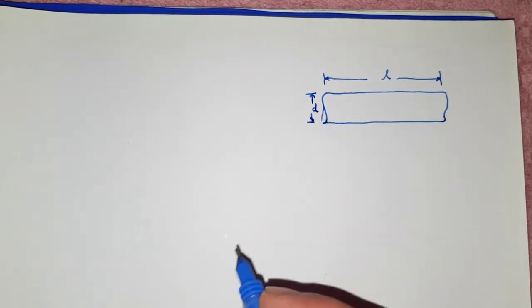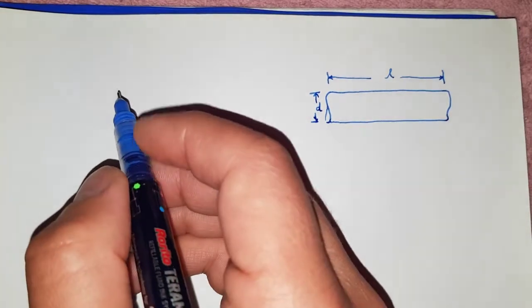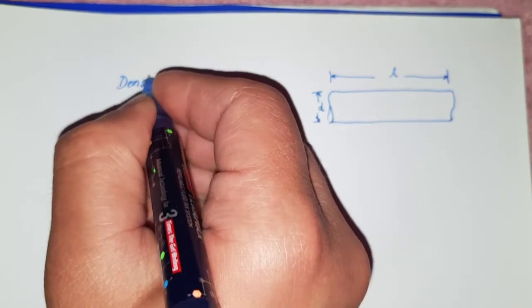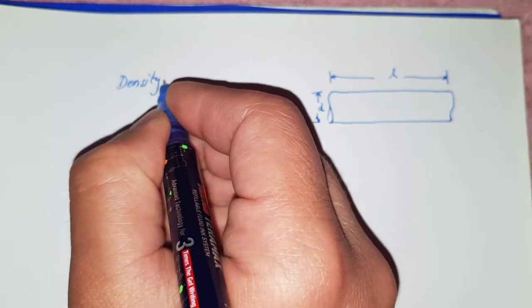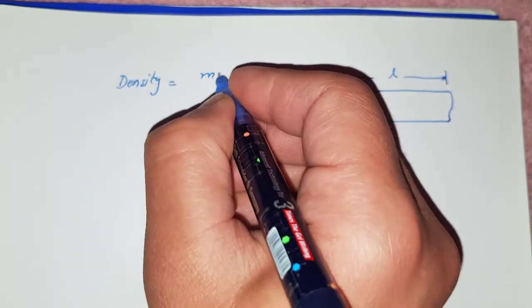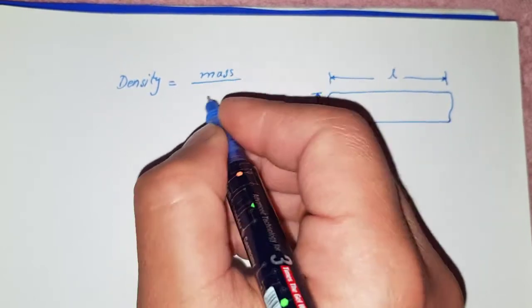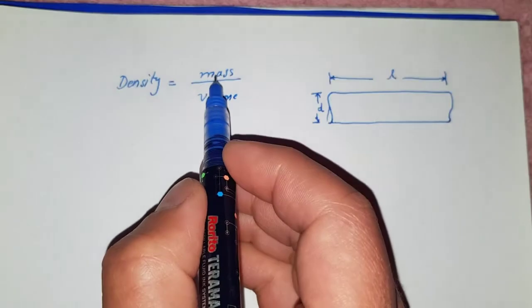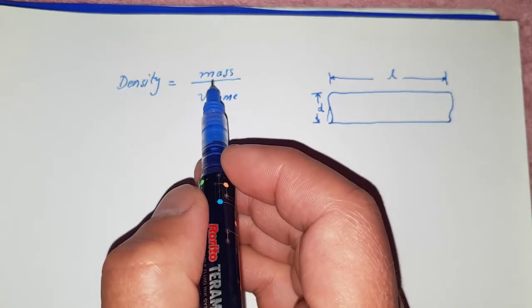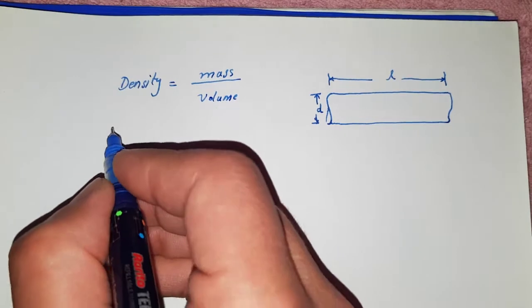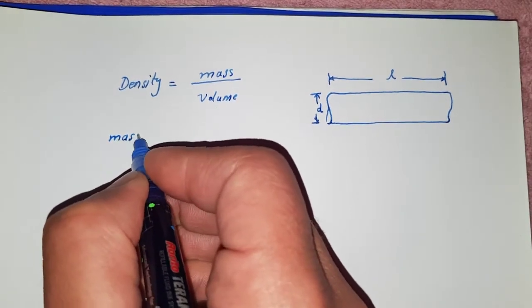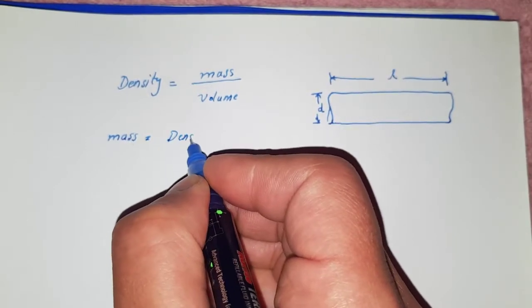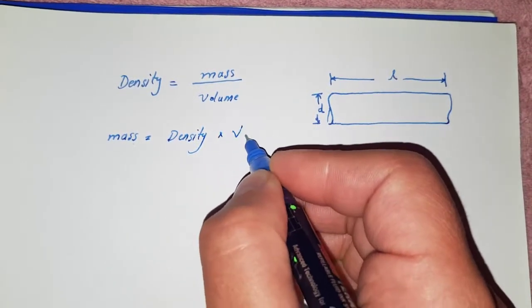From school we all know that the formula for density is equal to mass upon volume. If you want to find the mass of the element, we can simply write mass is equal to density into volume.